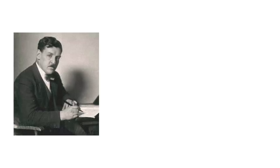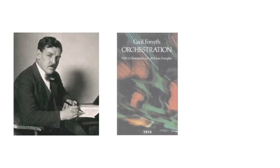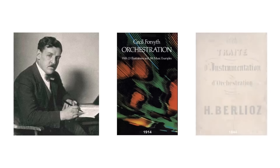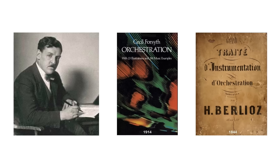Jacob started his teaching career with the Royal College of Music at the fairly precocious age of 29, and remained there for over 40 years. When he started teaching in 1924, he faced the challenge of building his own course curriculum from a series of books that had no course structure. The great orchestration tomes available at the time were extensive treatises, like Forsyth's Orchestration and Berlioz's Grand Treatise on Instrumentation.